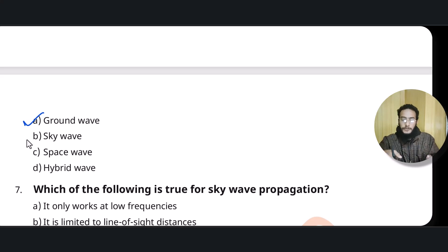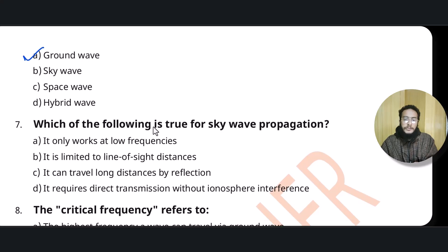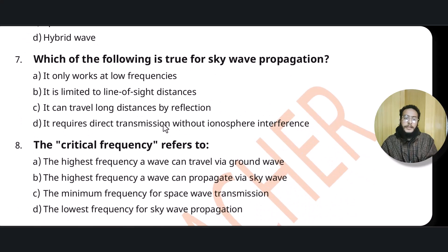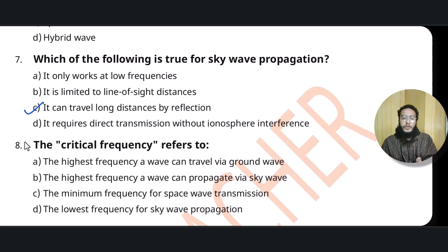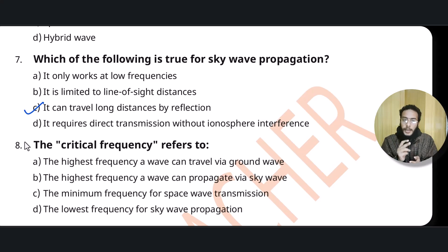Question number seven: which of the following is true for sky wave propagation? It reflects from the ionosphere — so the correct answer is that it can travel long distances by reflection from the ionosphere. Remember: sky waves propagate by reflection from the ionosphere, which is a layer of the atmosphere made of ionic particles.